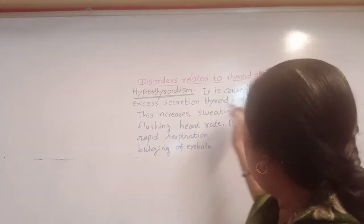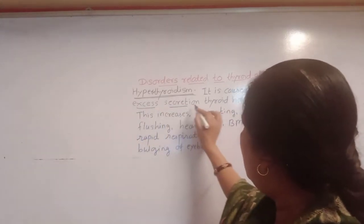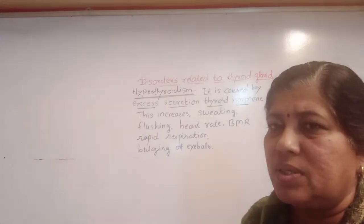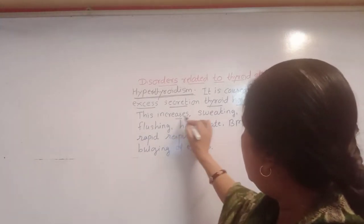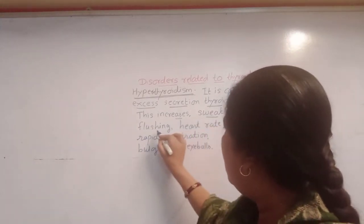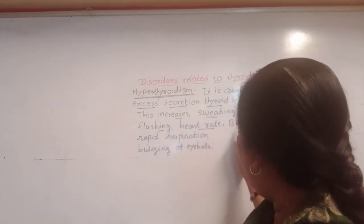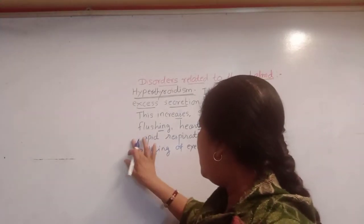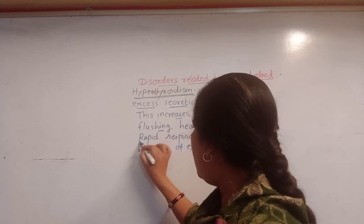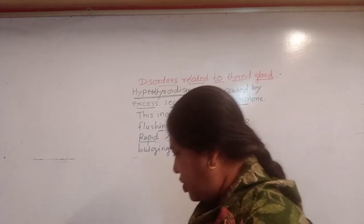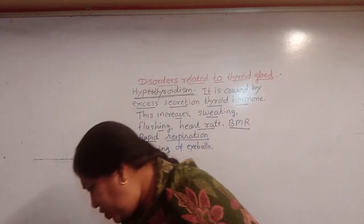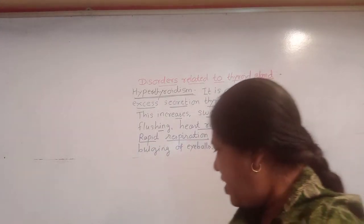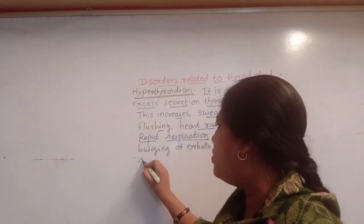To summarize: hyperthyroidism is caused by excess secretion of thyroid hormone — that is, thyroxine. It increases sweating, flushing, heart rate, and basal metabolic rate. It results in rapid respiration and bulging of eyeballs, and it also affects various physiological activities of the body.